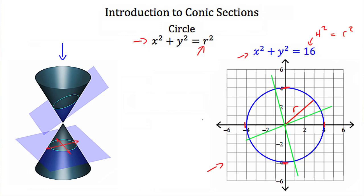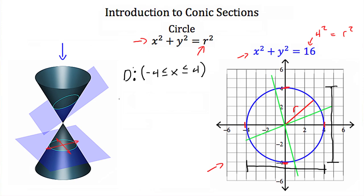The last thing we have to discuss is the domain and range of this circle, because circles have very limited domain and range. The domain is any value of x that we can plug into our equation that will provide us with an answer for y. We can tell from this circle that the only values of x that are going to get us a y value are between negative 4 and 4. So our domain is that x has to be between negative 4 and 4. Similarly, the only y values that will come out of this equation are between negative 4 and 4, so our range is also that y has to be between negative 4 and 4.